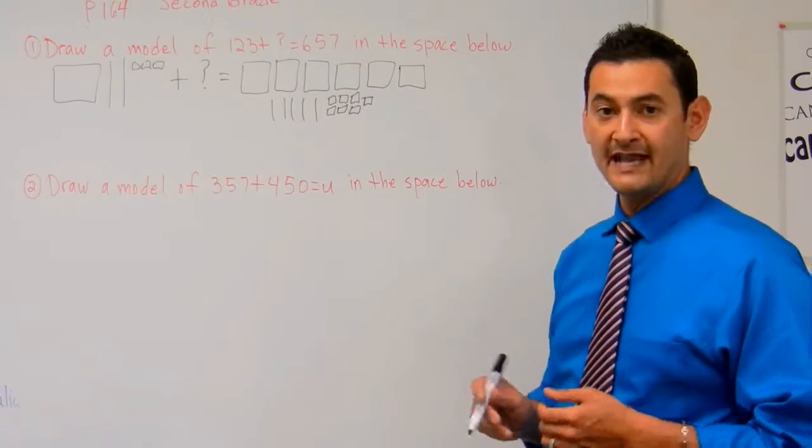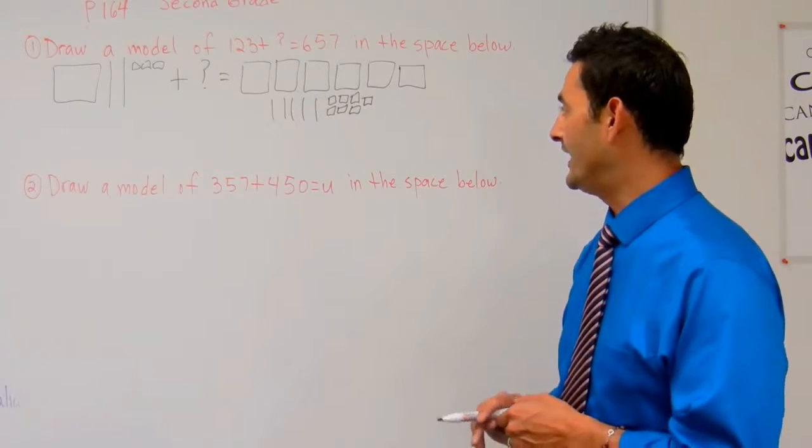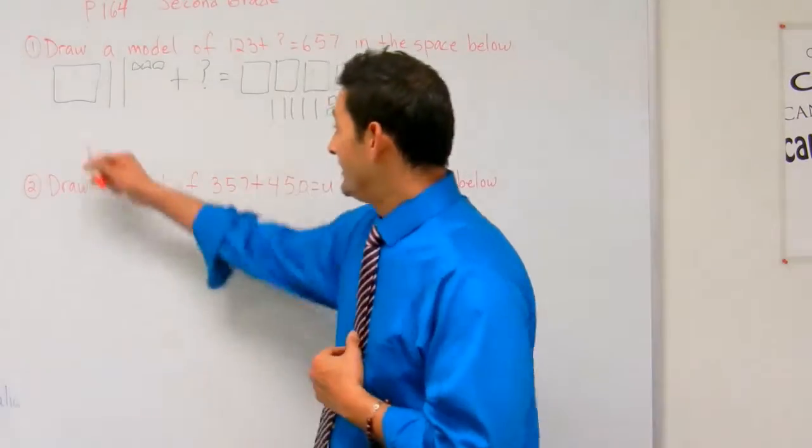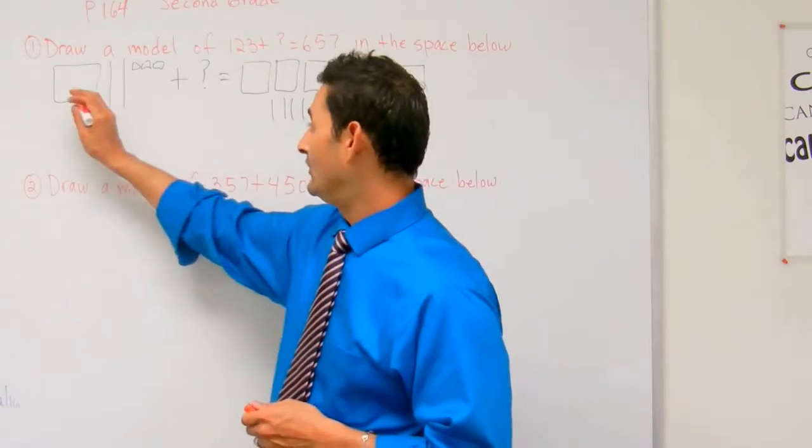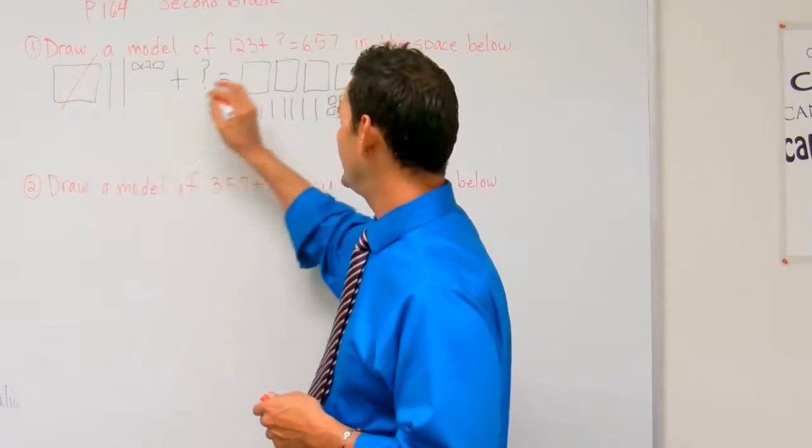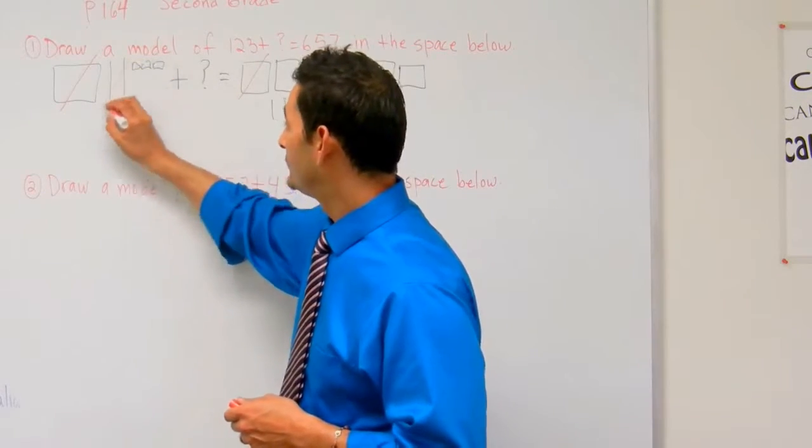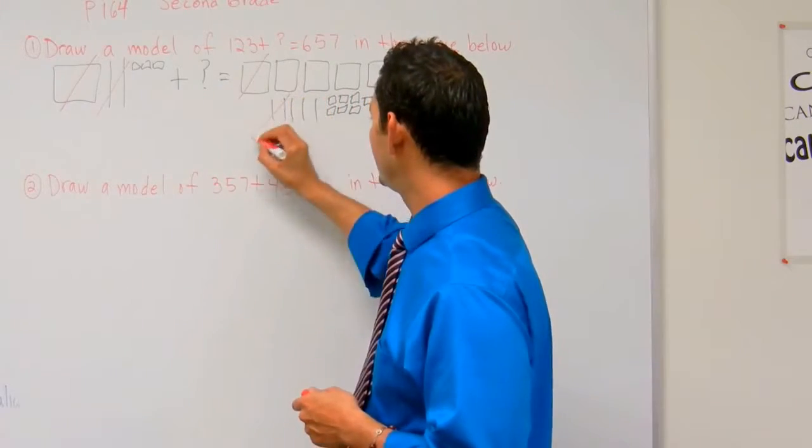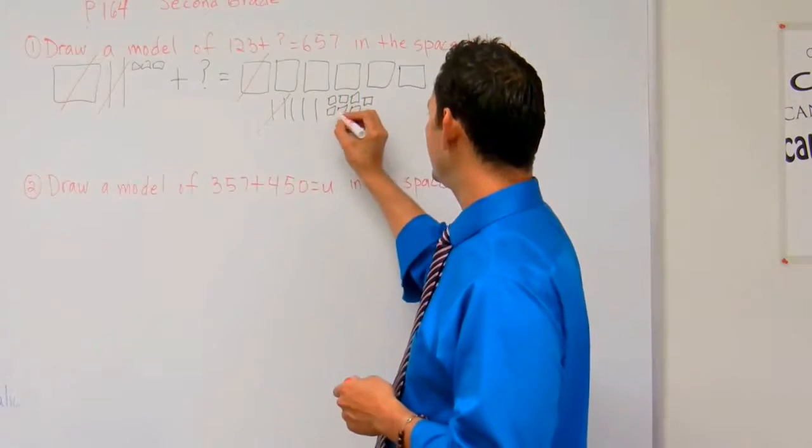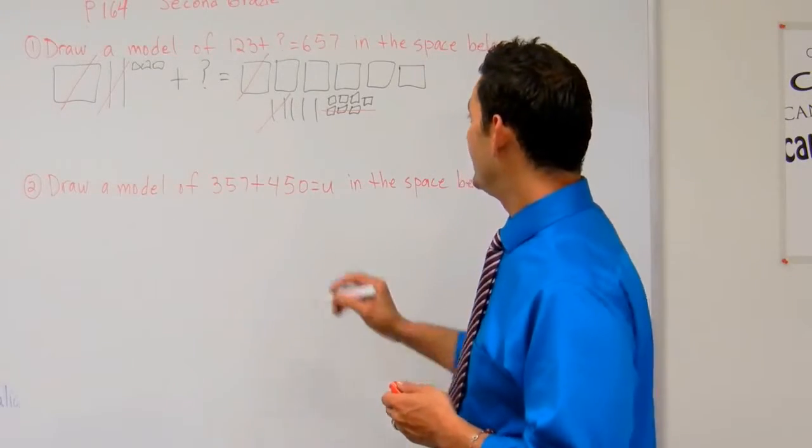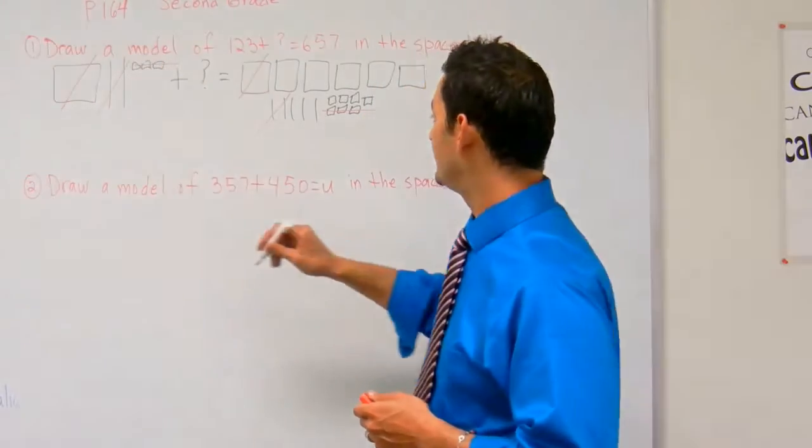But because we're outstanding, we're going to solve it. What we're going to do is take these out as we go along. So here we have a box of 100, let's get rid of that. Here we have two tens, let's get rid of two tens. Here we have three ones, let's get rid of three ones. What do we have left over?